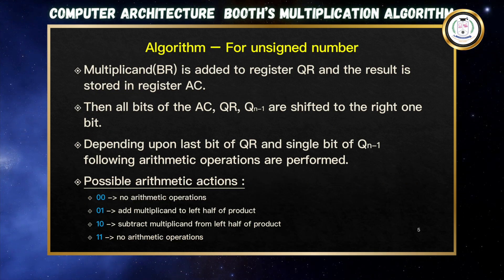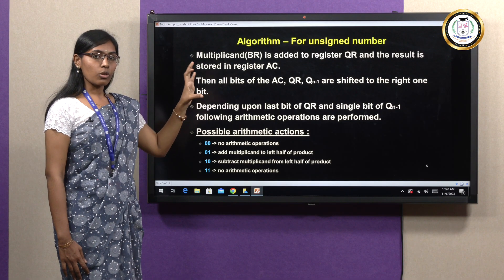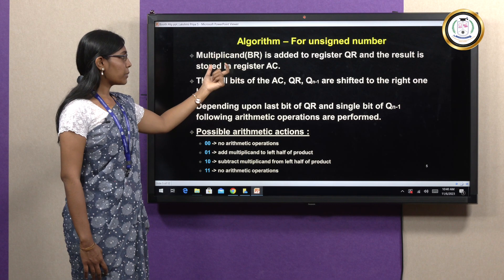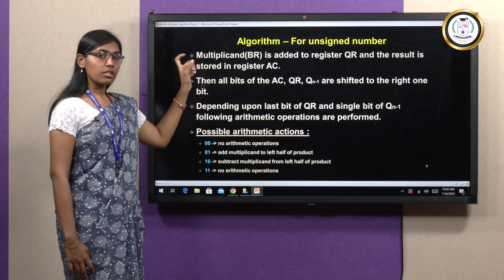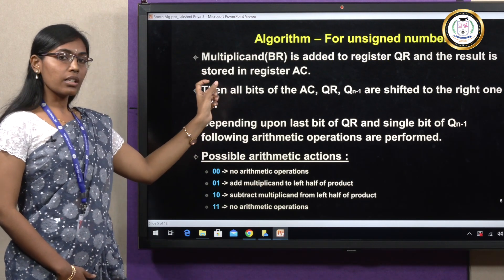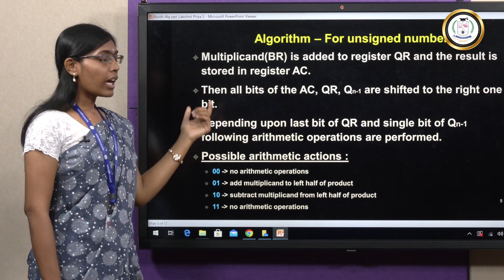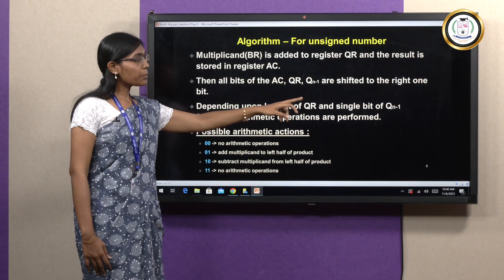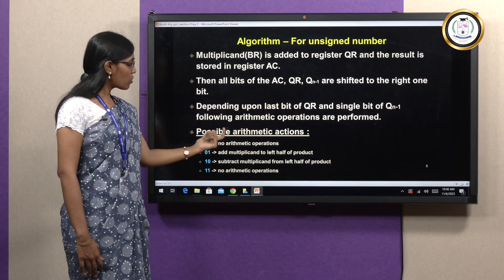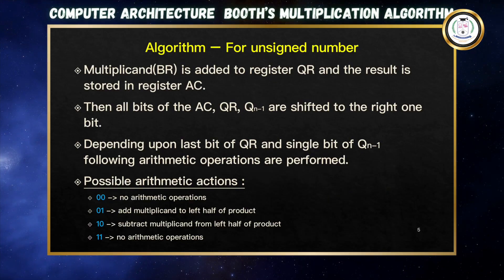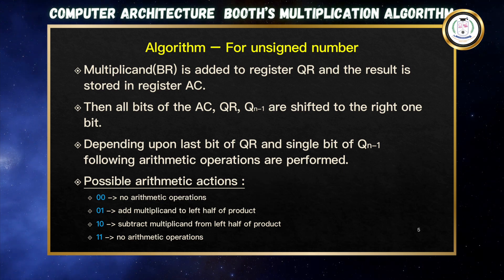For an unsigned number, the BR register is added to QR, and the result is stored in AC. Then all values of AC, BR, and QN-1 are shifted one bit right — an arithmetic shift right operation. Based on the values of QN and QN+1: if both are 0 or both are 1, no arithmetic operation is performed. If QN=0 and QN+1=1, or QN=1 and QN+1=0, corresponding operations are carried out.